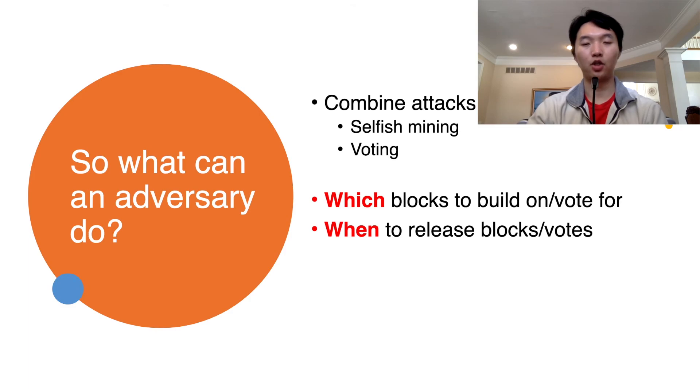We can get around this by composing two attacks, an attack from the validator side and on the mining side. Using both roles, an adversary can choose which blocks to build on and vote for, and when to release blocks for votes. Intuitively, this should give the adversary more opportunity to exploit the incentive mechanism. As we shall soon see, this intuition is correct. Note that this game is too large for value or policy iteration to solve.